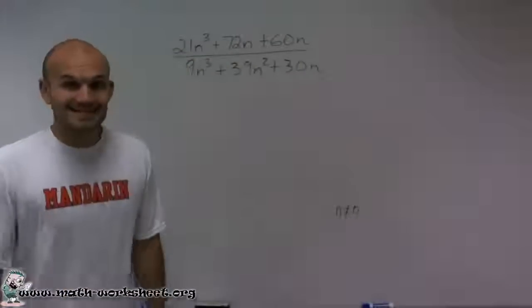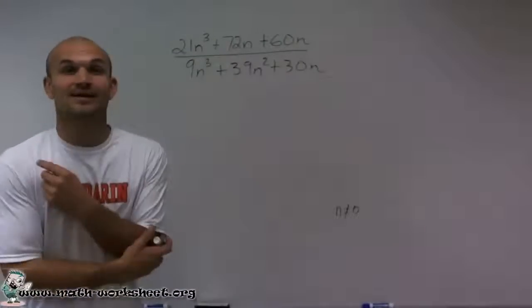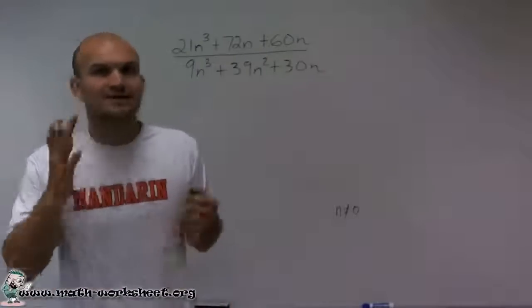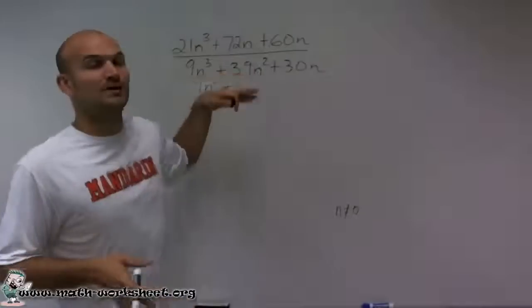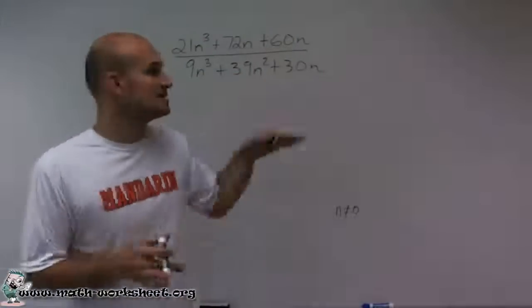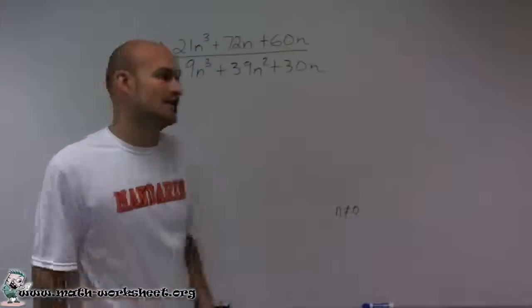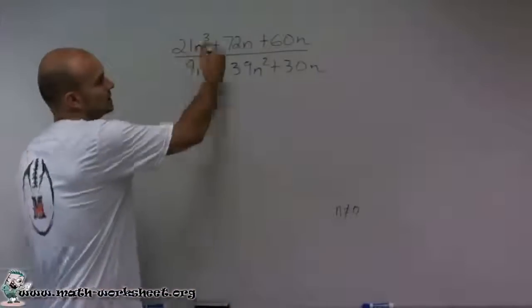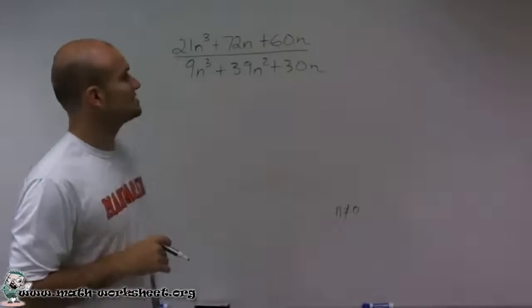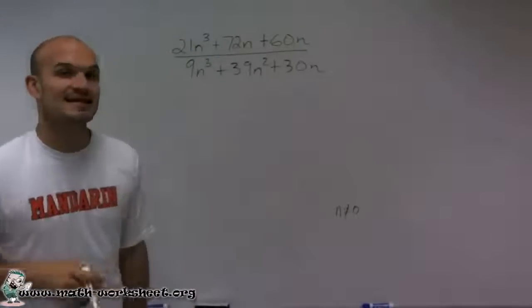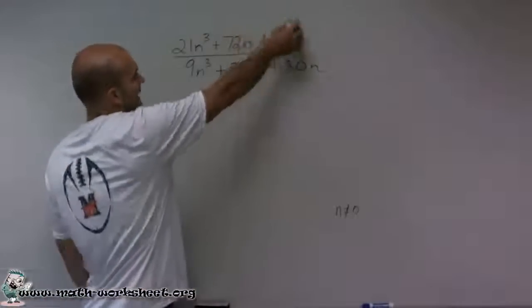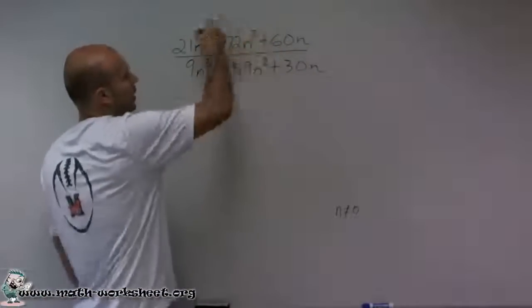Now, the next thing we need to do is we need to simplify this. So when simplifying, what we're trying to do is take out the redundancy of our numerator and denominator. Take out what our terms share in the numerator and denominator. What do they have in common? So I look up here on my numerator. I'm going to do that first.